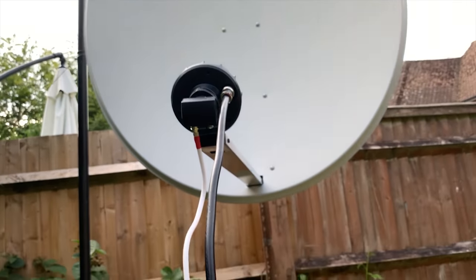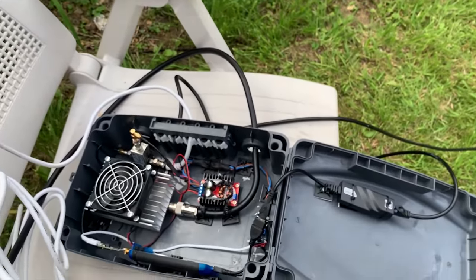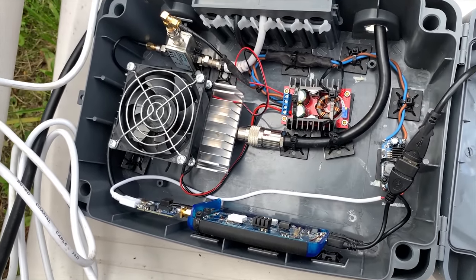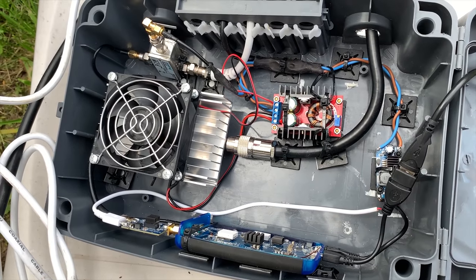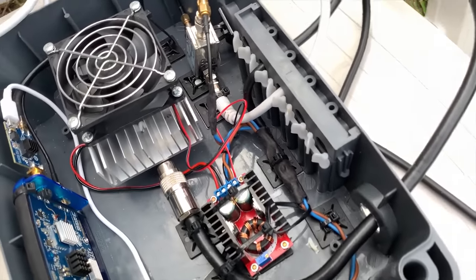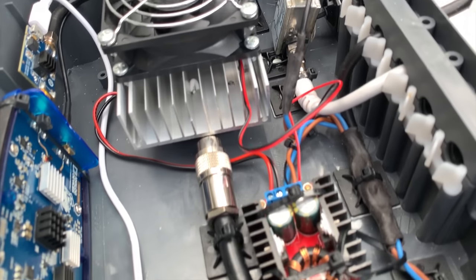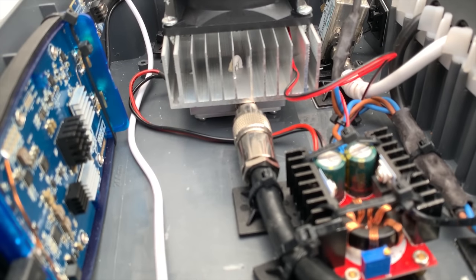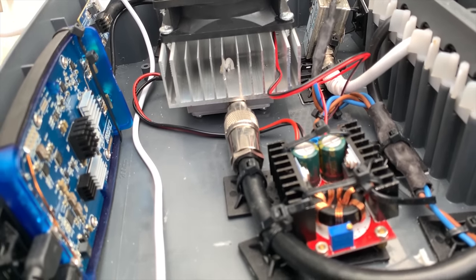So here's the inside of my QO100 ground station based on a Pluto SDR and a version 3 SG Labs amplifier, which provides a nice 20 watts at 2.4 gigs. Now, I do have a video on my channel dedicated to this if you're interested in seeing how this was built and what each of the components does.